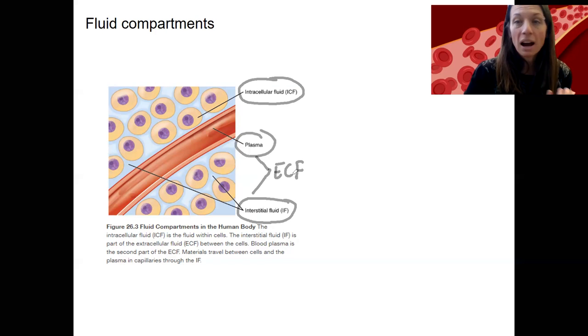Before this, we pretty much just talked about ICF and ECF being two different things, and they are. Inside the cell, the concentration of various ions is different than it is outside of the cell. Now we're going to break it down, also separating the plasma out from the interstitial fluid. Interstitial means around the tissues, around the cells.